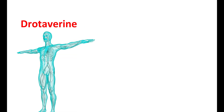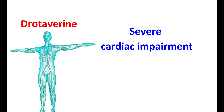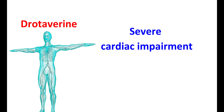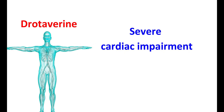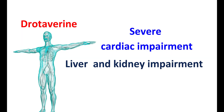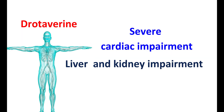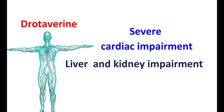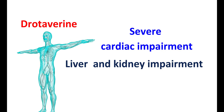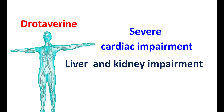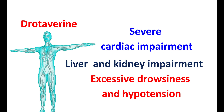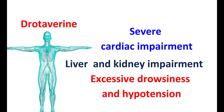We have already discussed that drotavarine can increase cardiac contraction, so in people with any severe cardiac impairment, this medication should be avoided. Drotavarine is extensively metabolized in the liver and mainly excreted through the urine. Therefore, in people with liver and kidney impairment, this medication should be avoided as it results in the accumulation of the medication in the body. With increased accumulation, drotavarine can produce toxic effects, particularly excessive drowsiness and hypotension.